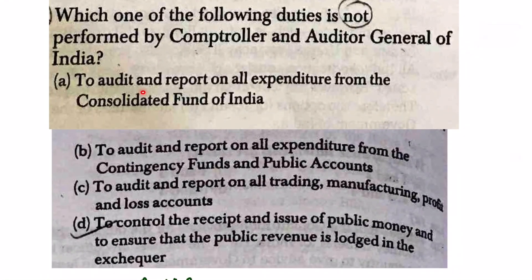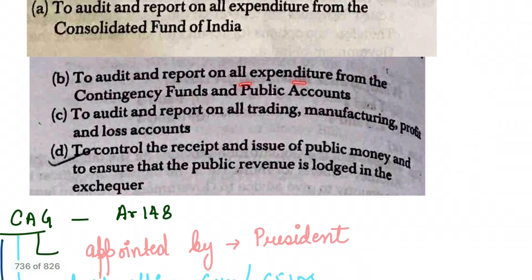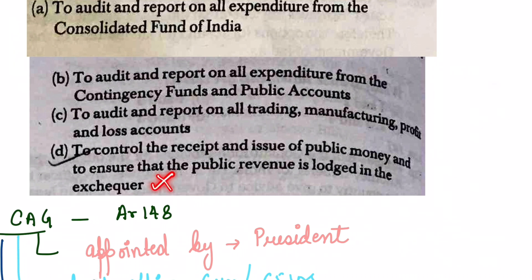The duties include: to audit and report on all expenditures from the Consolidated Fund of India, and to audit and report on all trading, manufacturing and loss accounts. One option is to control the receipt and issue of public money and ensure that public revenues are lodged in the exchequer — this option is wrong because it is not the CAG's role to control public money directly. The correct answer is option B.